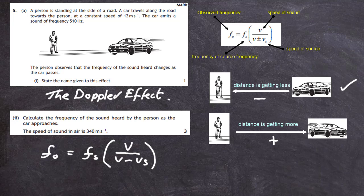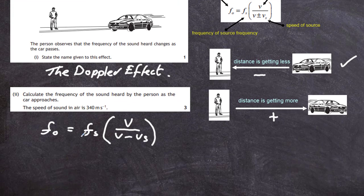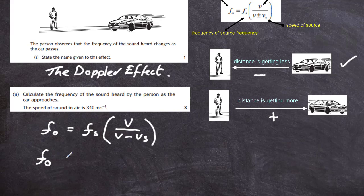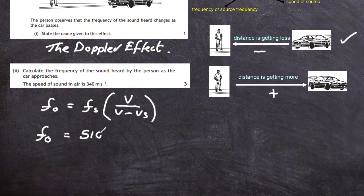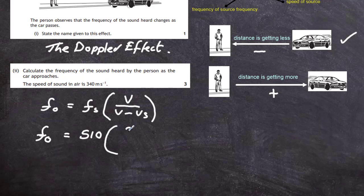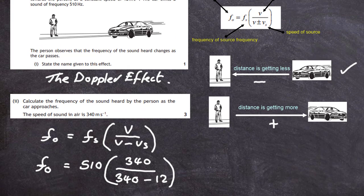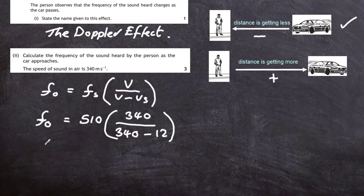Now we put in the numbers to calculate the frequency the person observes. F0 equals Fs times V divided by V minus Vs. F0 equals the frequency of the horn which was 510 hertz, multiplied by 340 divided by 340 minus 12. On our calculator we get 529 hertz.